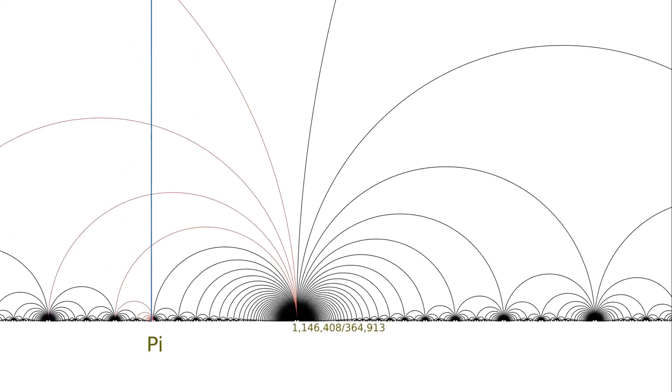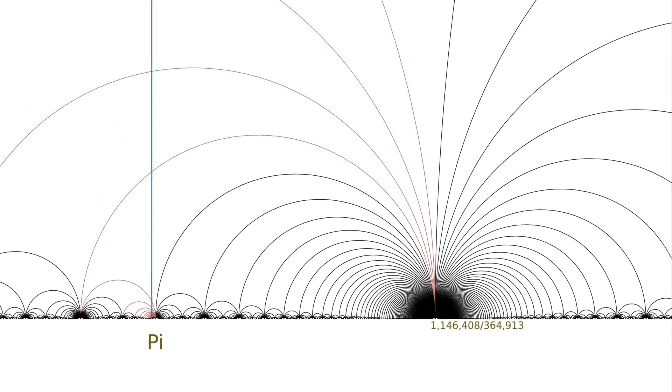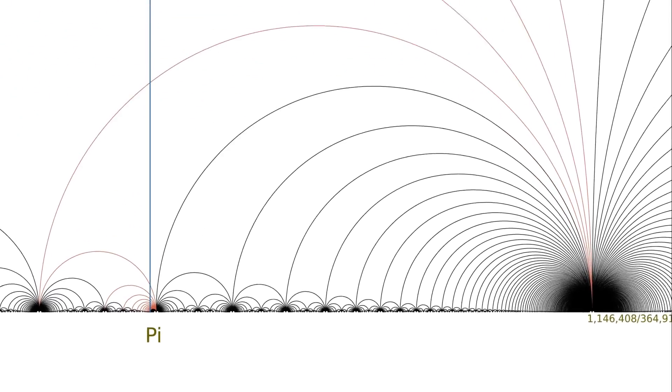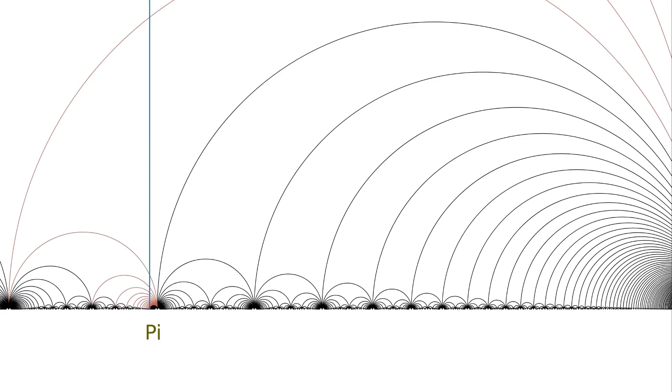One final note as we watch the continued fraction expansion zoom in. These arcs I've added in are actually hyperbolic geodesics in the upper half complex plane, and the hyperbolic geometry that naturally occurs there has a lot to say about continued fractions. But that's a story for another time.